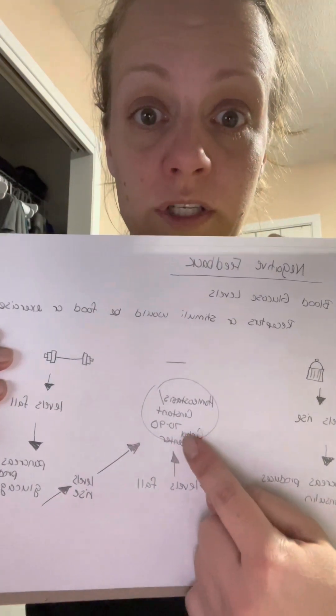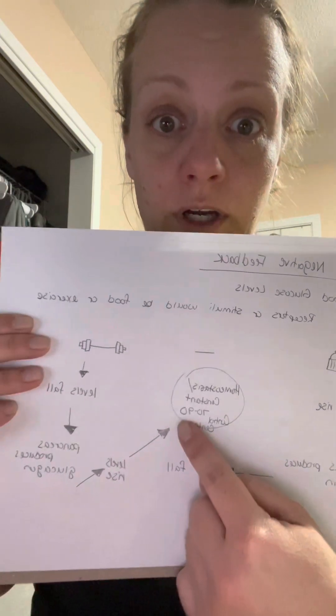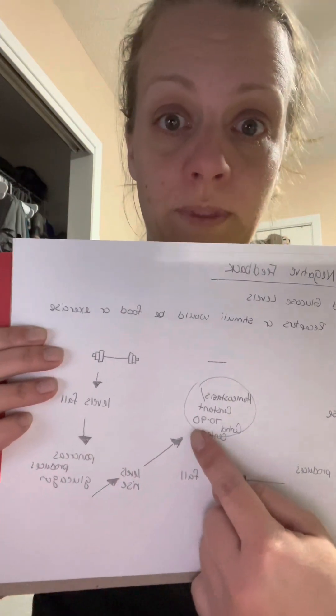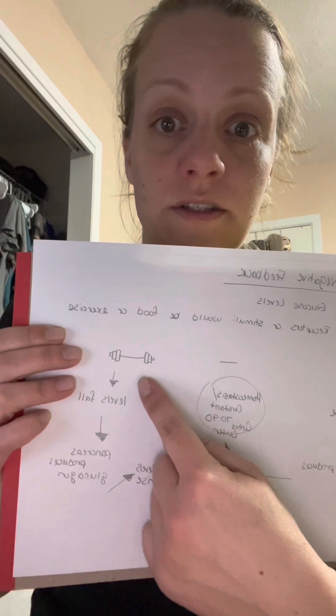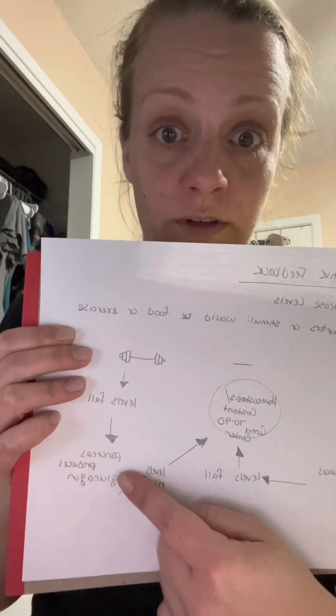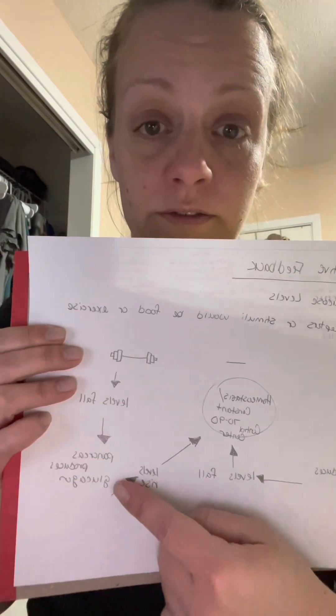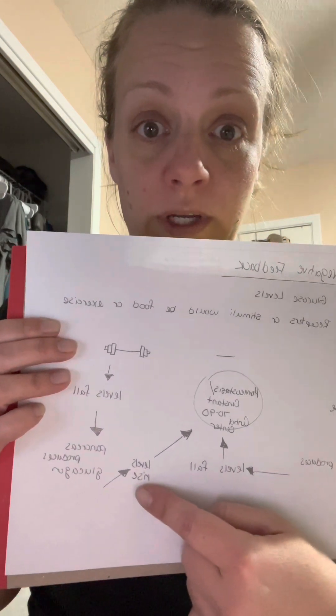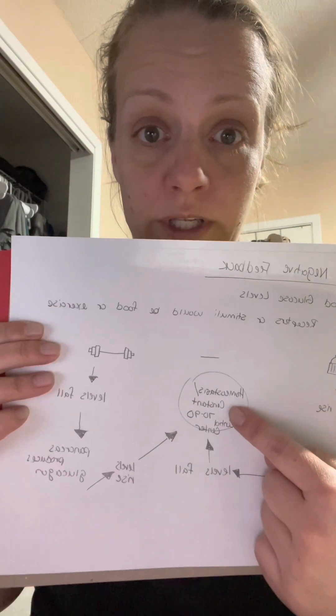Our control center for most individuals is between 70 and 90 for a fasting blood sugar. When we exercise, our levels fall. Our pancreas then produces glucagon, and our levels begin to rise, taking us back to our control center.